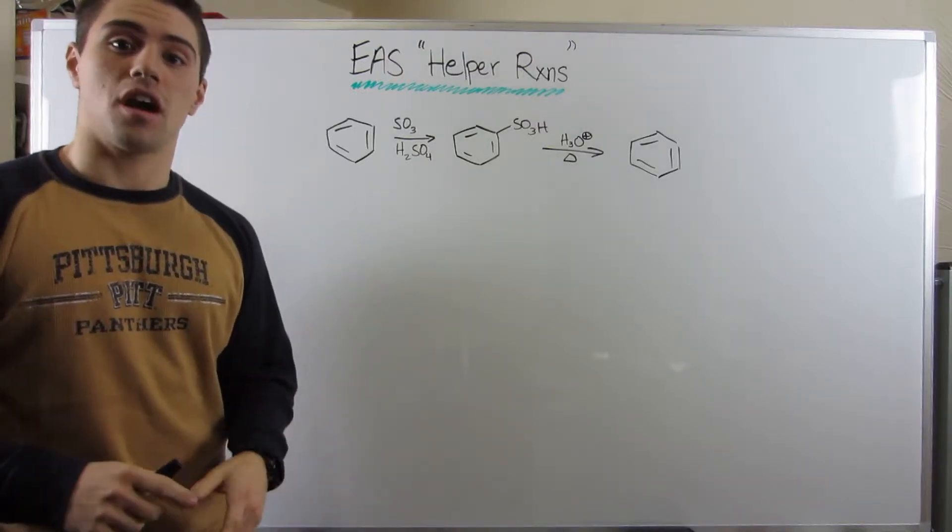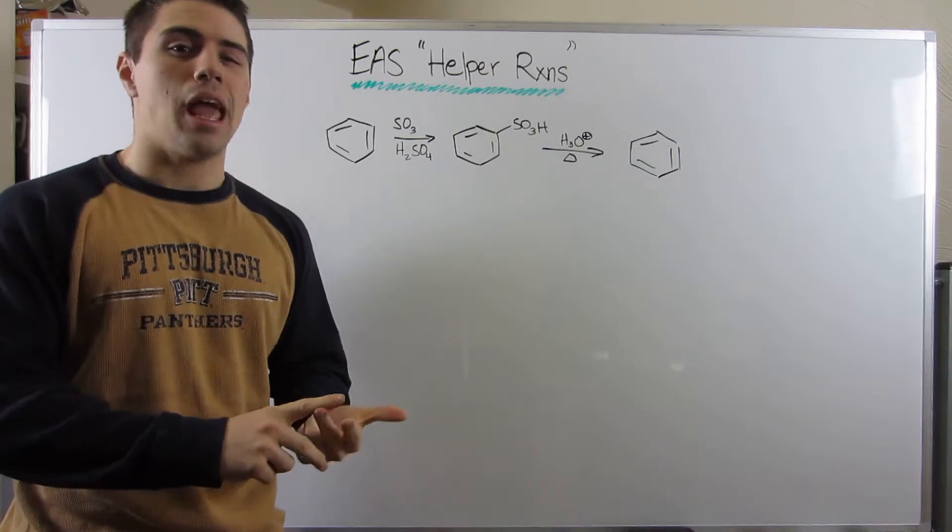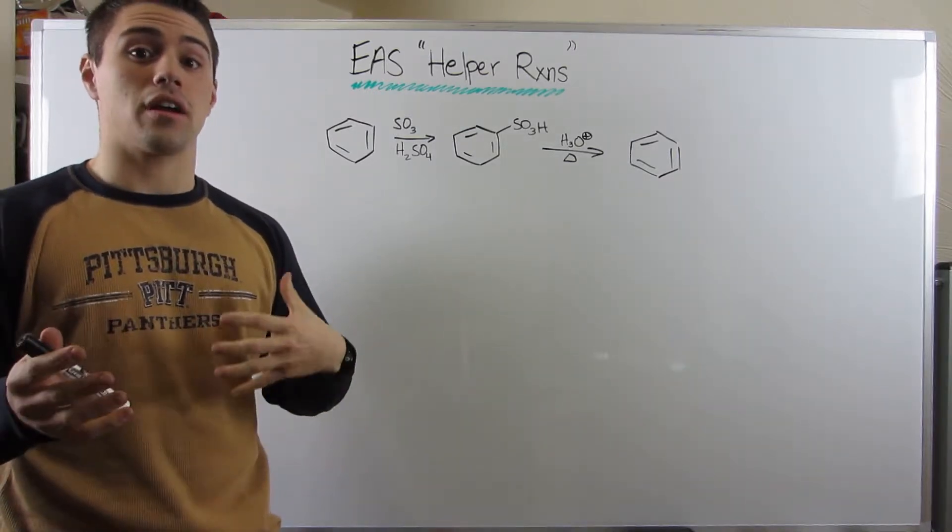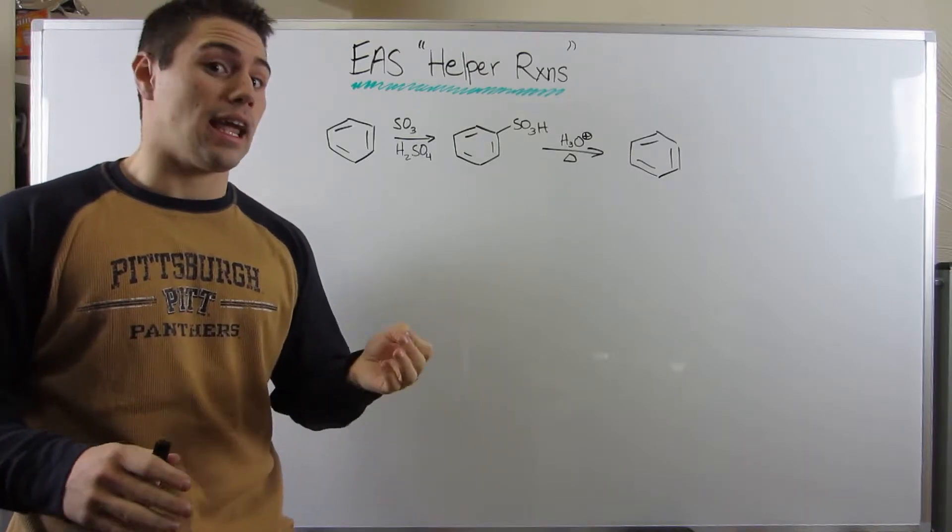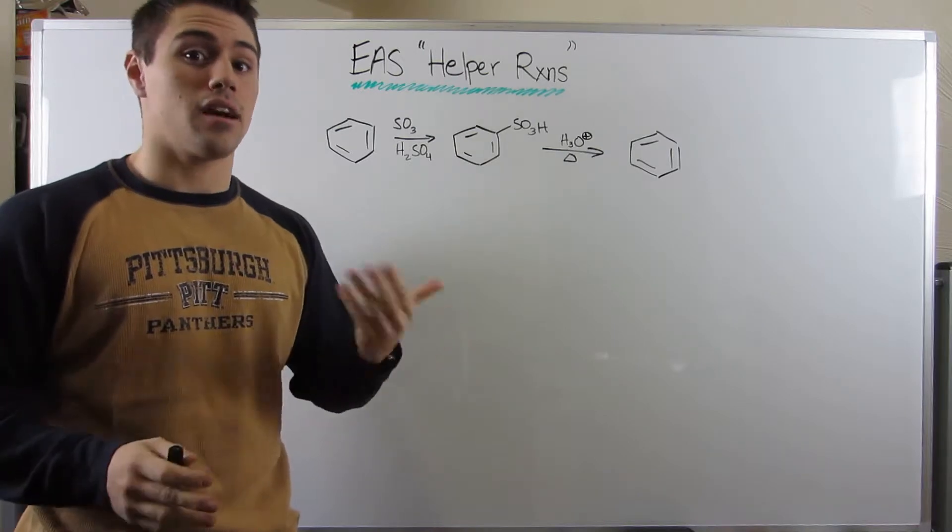Alright gang, now that we've discussed the basic EAS reactions and mechanisms, and we've fiddled around with how to figure out if something is an ortho-paradirector, aka an EDG or electron donating group, or a metadirector, aka an EWG, electron withdrawing group, now let's talk about some helper reactions.